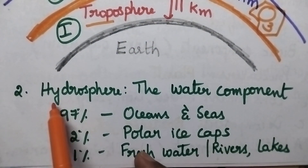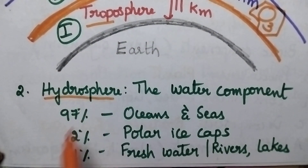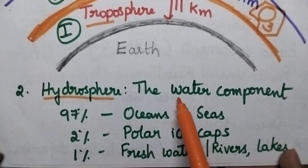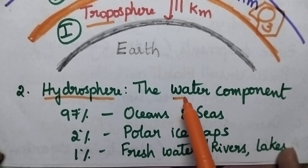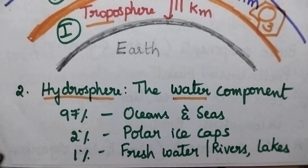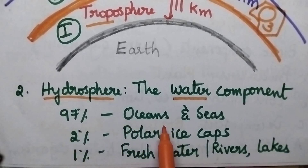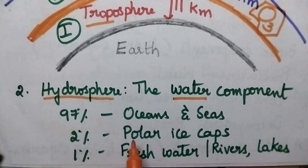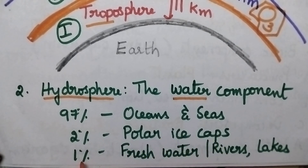The second segment of the environment is called hydrosphere — it is the liquid component. Especially, 97% of the water is locked in oceans and seas, 2% of water is locked in polar ice caps, and only 1% of the water is available as fresh water in rivers and lakes.